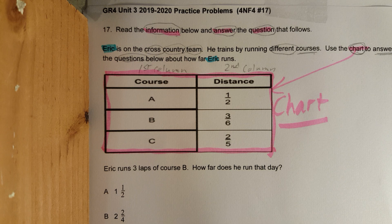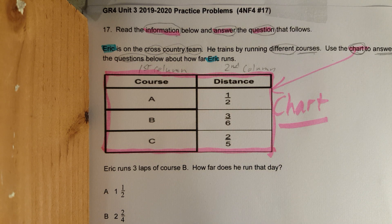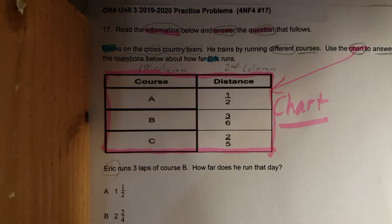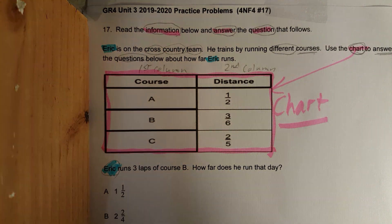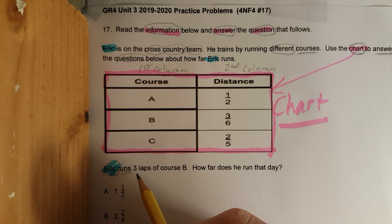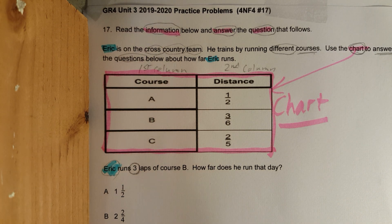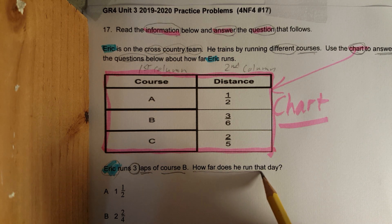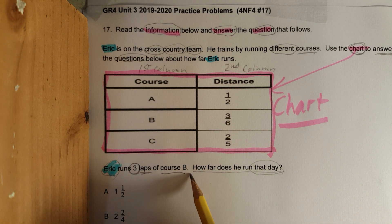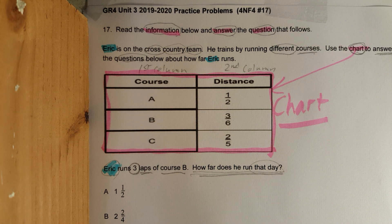This is fractions standards multiplying, so we are probably multiplying fractions. Let's find out. Eric, we see Eric again. Eric runs, finally we see a digit, three laps of course B. How far does he run that day? So always underline the question. What are you being asked to solve? How far does he run that day? Which day? Just this day.